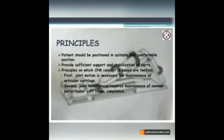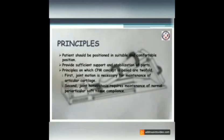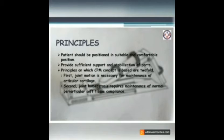First, joint motion is necessary for maintenance of articular cartilage. Second, joint homeostasis requires maintenance of normal periarticular soft tissue compliance.